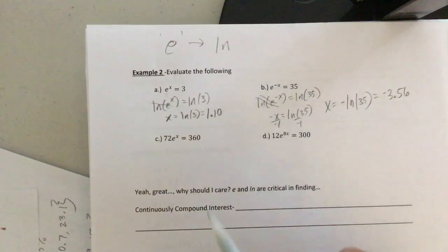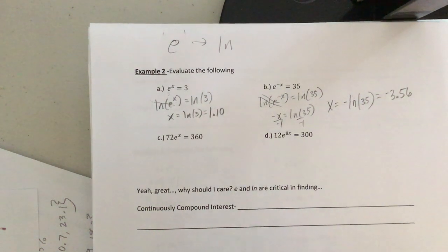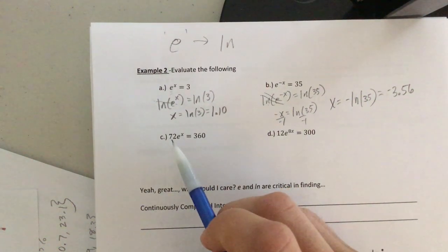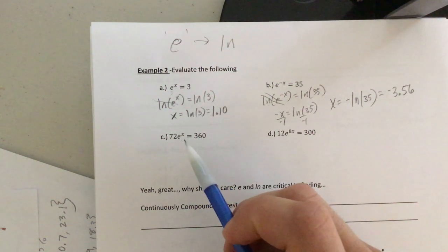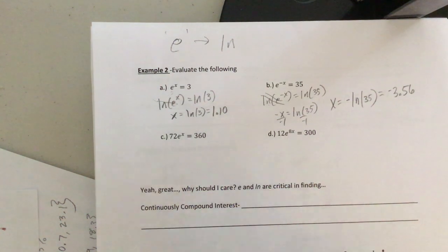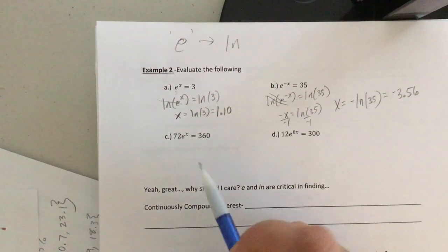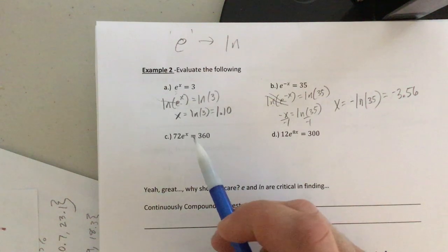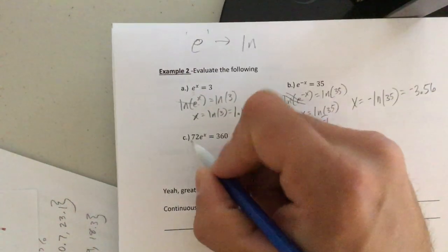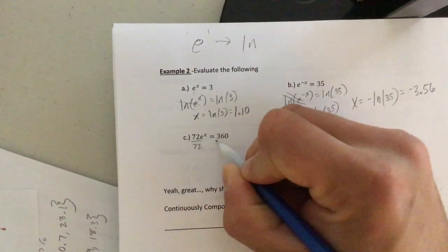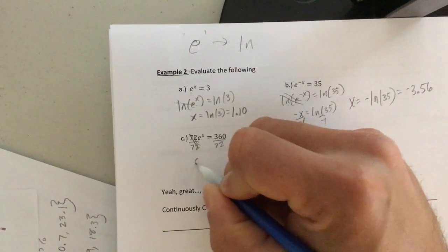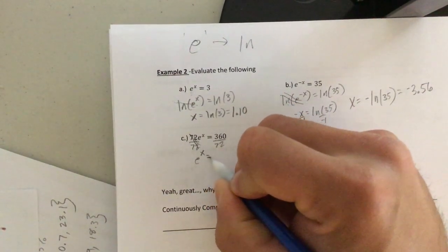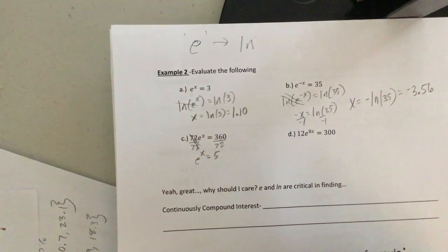All right. Let's keep rolling. C and D are a little more involved. Once again, you definitely want to stay tuned in. Okay. We have 72 times E to the X equals 36. Just like any other variable, we have to isolate this first. What you might say, well, what do you mean, Mr. Herr? We can't just take the natural log of both sides right away. We have to divide both sides by 72. The reason we're dividing is because that will isolate E to the X. 360 divided by 72, that gives us 5.